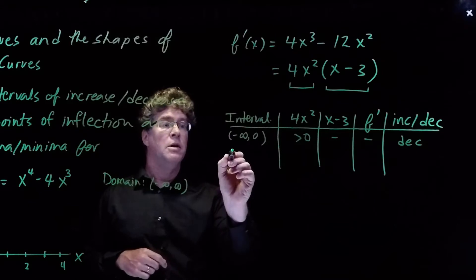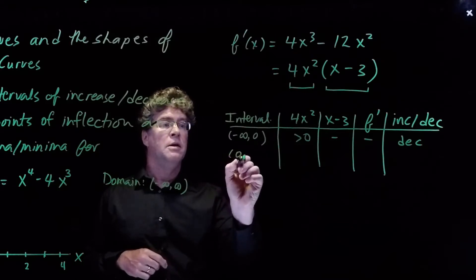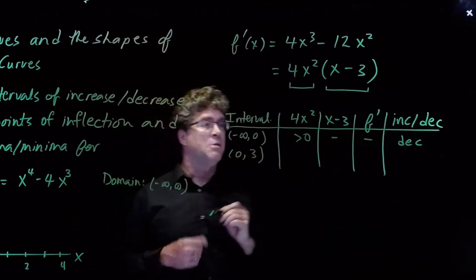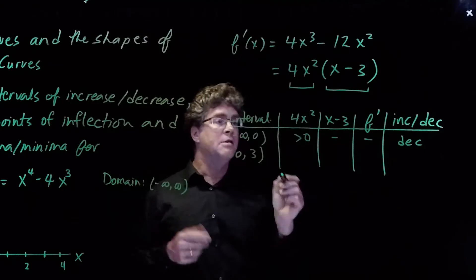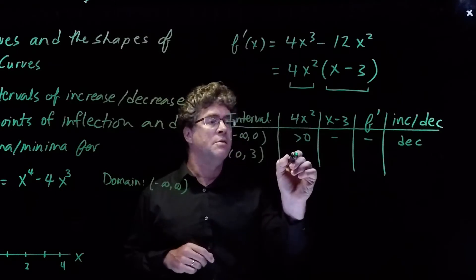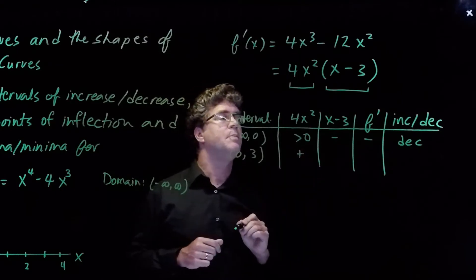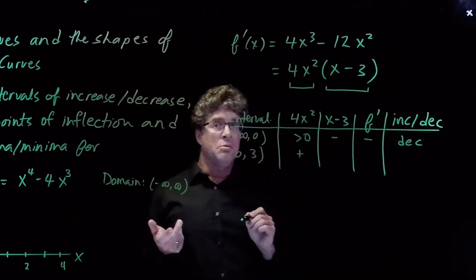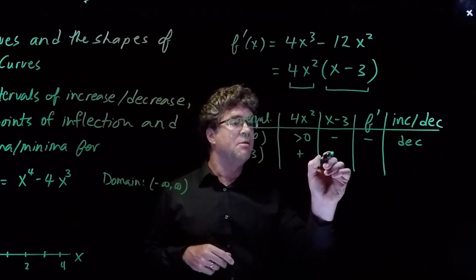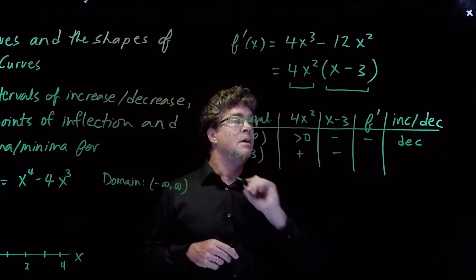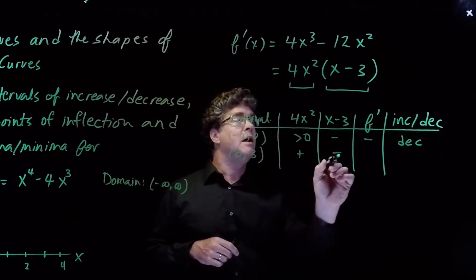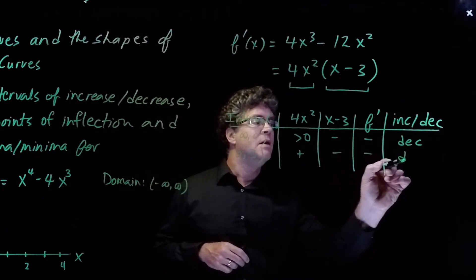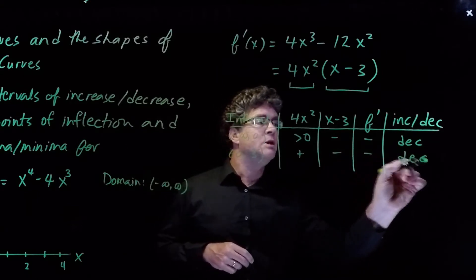On the interval (0, 3), 4x squared is again going to be positive, and x minus 3 is going to still be negative. So f prime is therefore negative, and the function is decreasing.